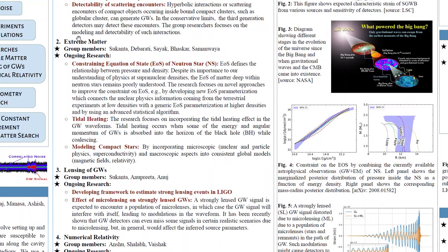Then the next part under CBC is the extreme matter group. Here are the group members and I'm discussing three projects here. First is about constraining the equation of state of neutron star.